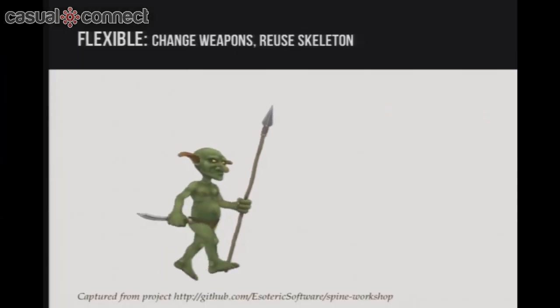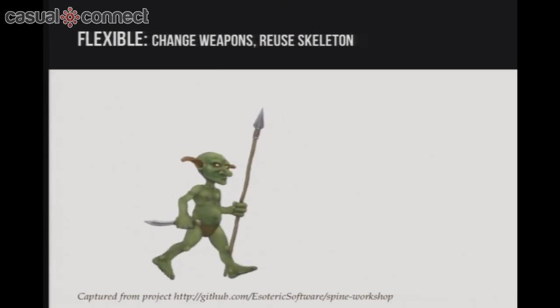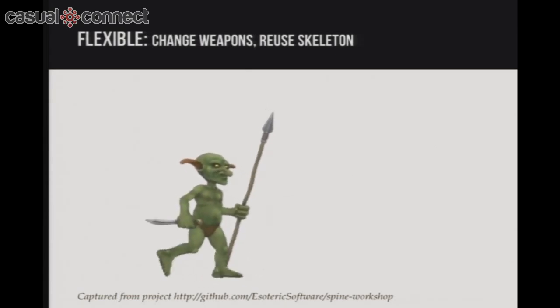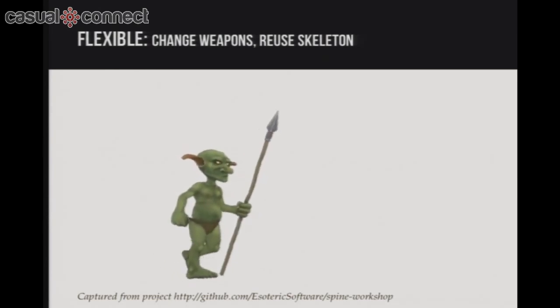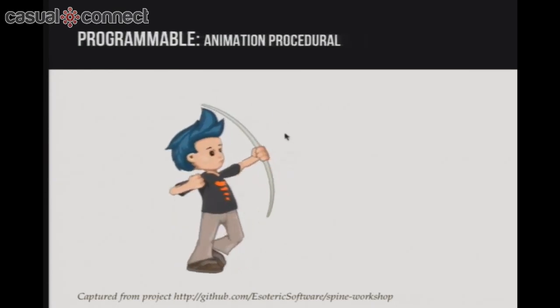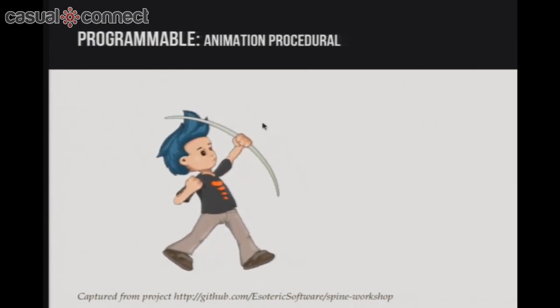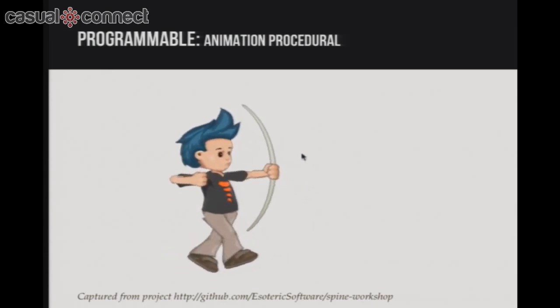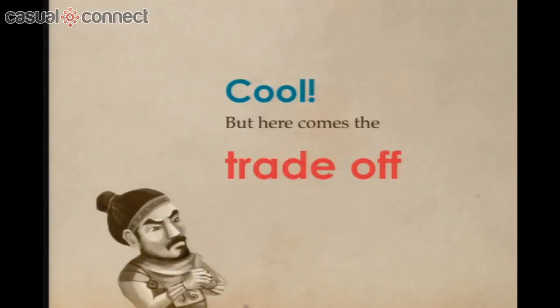There's another great feature of Spine called Skinning. It allows you to reuse the skeleton you've created and also the animations for other characters in your game. At runtime, you can change weapons, change clothes, and change the total appearance of your character easily. By programmable, I mean you have total control of the skeleton at runtime — you can do cool stuff like making the character aim in the direction you want, or create physical bodies for different parts of your character so he can interact with the environment physically.